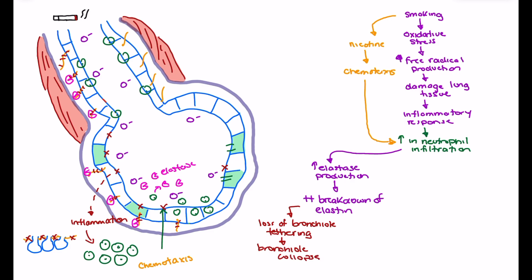This is especially true during expiration — as intrathoracic pressure goes up, our bronchioles become prone to collapse, and this is going to reduce our lumen size. The increased pressure, or inability to resist that pressure in the intrathoracic space, pushes the bronchiole tissues inward, leading to a reduction in lumen size. Loss of bronchial tethering therefore leads to a reduction in lumen size.